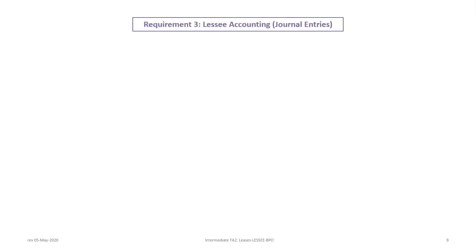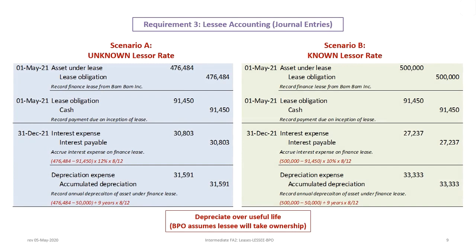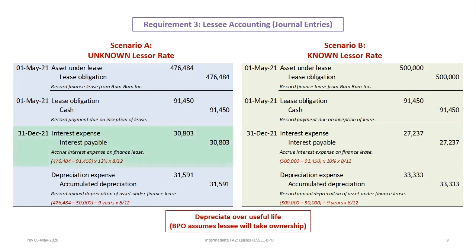Let's proceed with the journal entries under both scenarios. The dates are the same; only the numbers differ. To record the finance lease from BamBam, the lessee debits the asset under finance lease (or Capital Lease under ASPE) and credits the lease obligation for the present value: $476,484 in scenario A, or $500,000 in scenario B. The entry to record the payment due on inception is the same for both — debit lease obligation, credit cash — because the payment amount is the same.